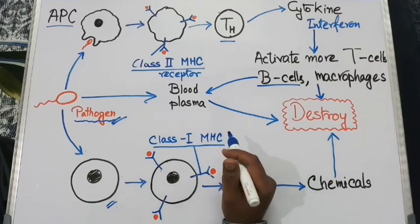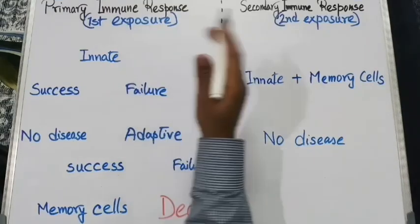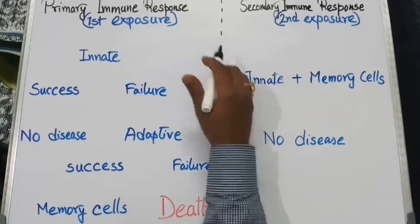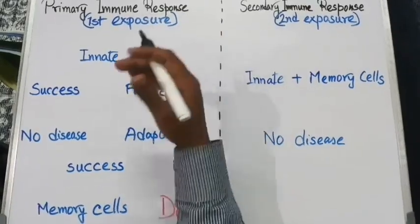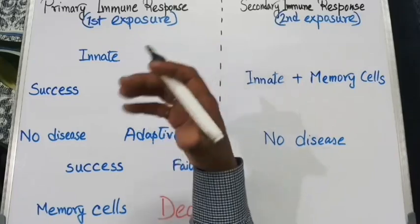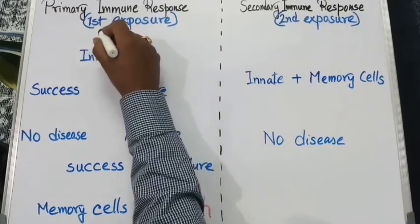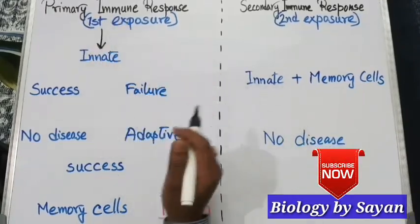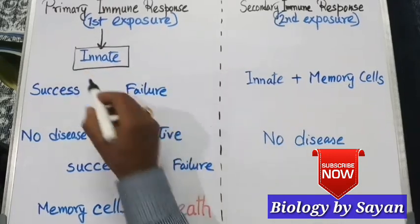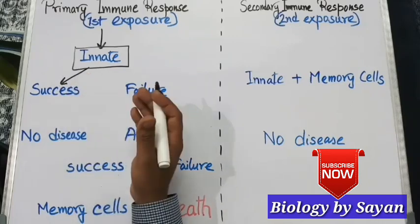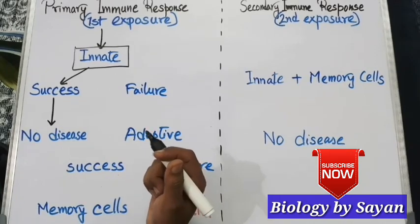Now let's learn about primary and secondary immune responses. Our immune response is of two types: primary and secondary. Primary immune response is the first exposure of our body's immune cells to a foreign pathogen or antigen. In primary immune response, the innate immunity is activated first. If the innate immunity succeeds in fighting the germs, it may lead to the absence of disease.